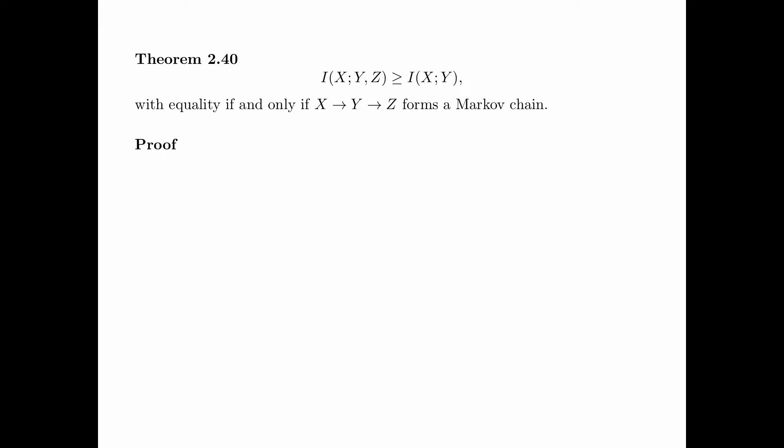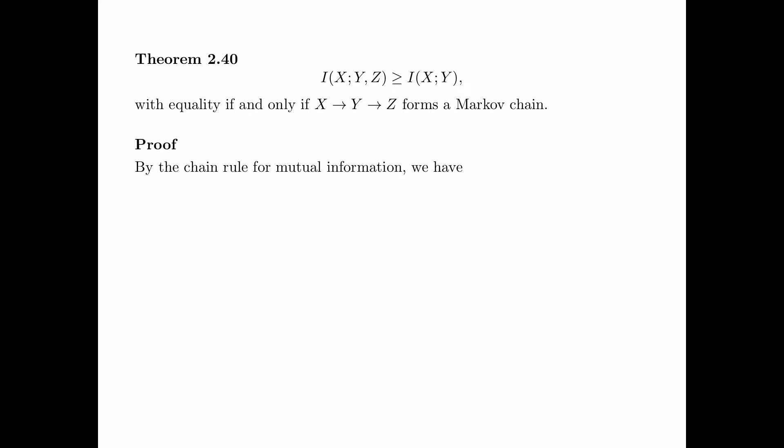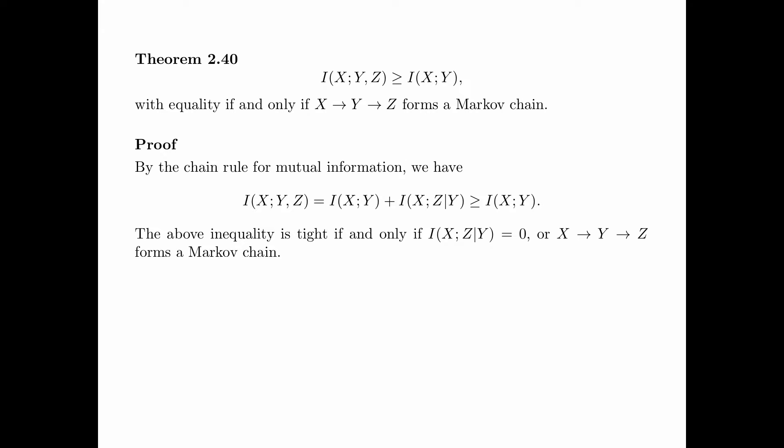The proof is straightforward. By the chain rule for mutual information, we have I(X; Y, Z) equals I(X; Y) plus I(X; Z | Y), which is greater than or equal to I(X; Y), because I(X; Z | Y) is always non-negative. The above inequality is tight if and only if I(X; Z | Y) is equal to 0, or X, Y, Z forms a Markov chain.